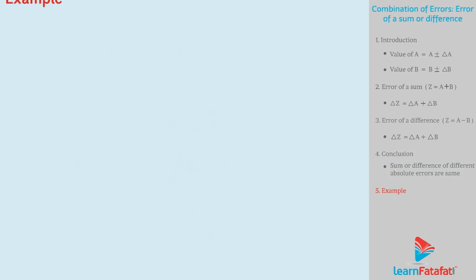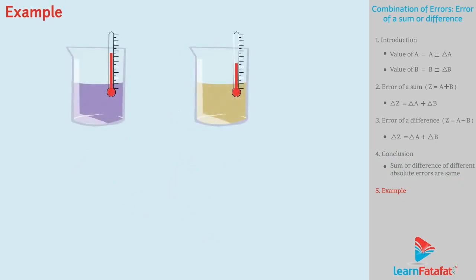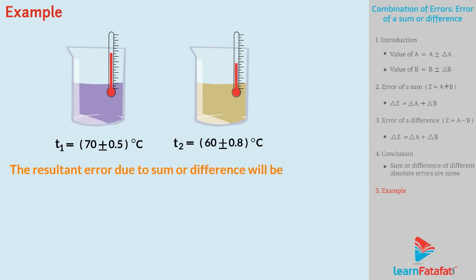Let's take an example on this. The temperature is measured as T₁ = 70 ± 0.5°C and T₂ = 60 ± 0.8°C. The resultant error due to sum or difference will be: we know that Δt = Δt₁ + Δt₂. Therefore, by putting the values, we get Δt = 0.5°C + 0.8°C, which gives Δt = 1.3°C.